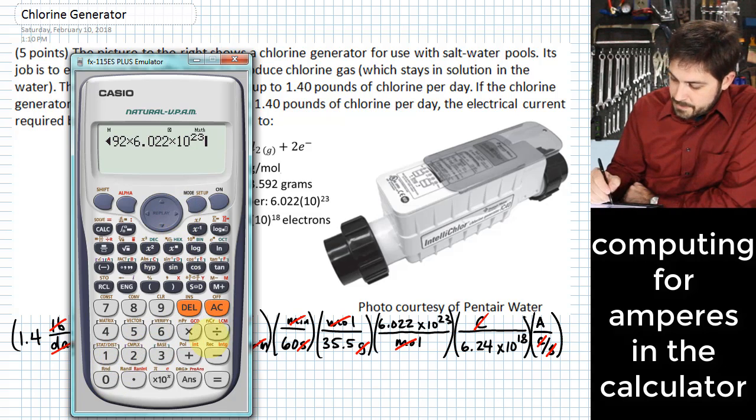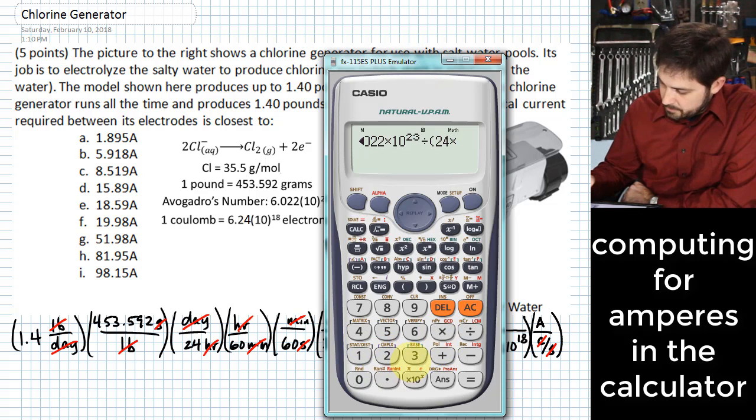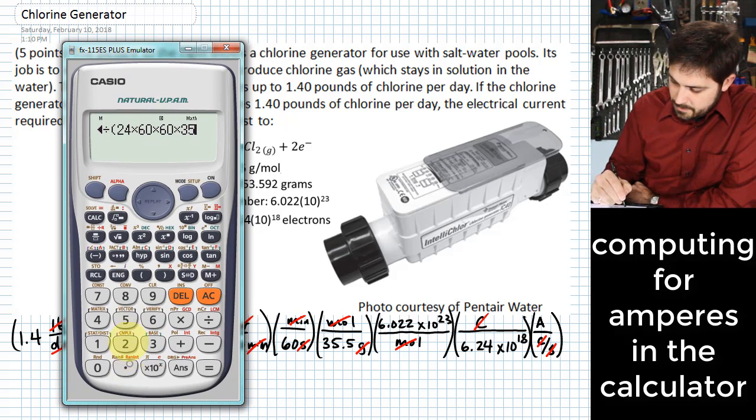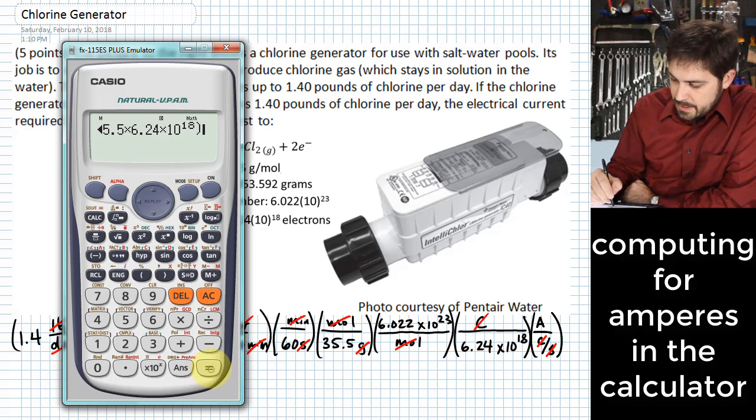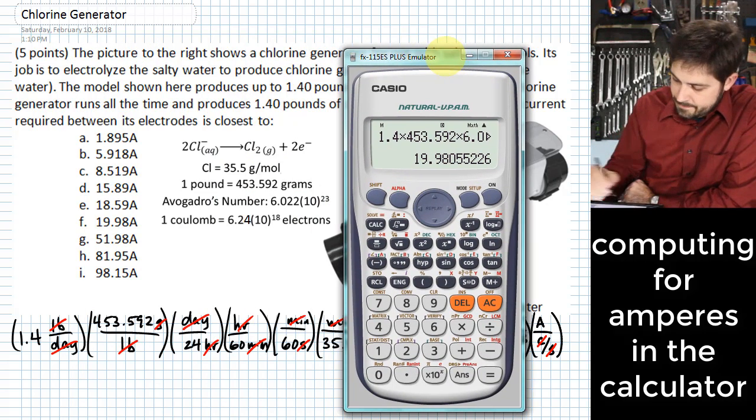All of this stuff divided by, I'll put all the rest of this in parentheses, we would have 24 times 60 times 60 times 35.5 times 6.24 times 10 to the 18th. And when we put all this in here, we should end up with an answer that's in amperes. And we see here we have 19.98 amperes.